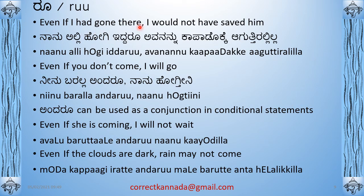'Even if I had gone there, I would not have saved him' — this is hypothetical past. In Kannada, for 'I would not have been able to', you use 'aguttirallilla'. This is the conditional past — 'agu' is become, 'aguttira' is the progressive form, and 'illa' is the past negation of 'iru'. So 'aguttirallilla' covers 'would not have become/been able to'. Next example: 'Even if you don't come, I will go' — neevu baralla andharu nanu hoogtini.